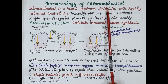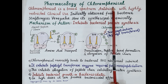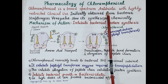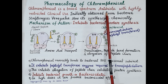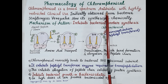In today's video we are going to study the pharmacology of chloramphenicol. Chloramphenicol is an antibiotic — a class of drugs used to treat bacterial infections. It is a broad-spectrum antibiotic as it acts against a wide range of disease-causing bacteria, including both gram-positive and gram-negative bacteria.